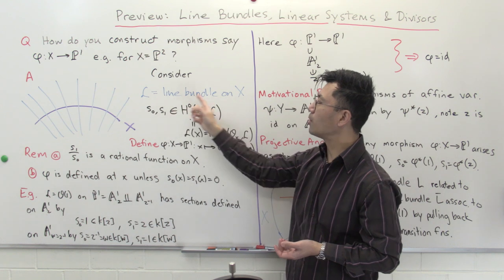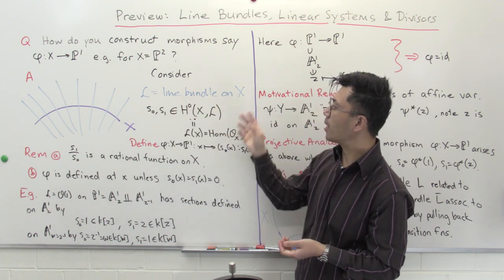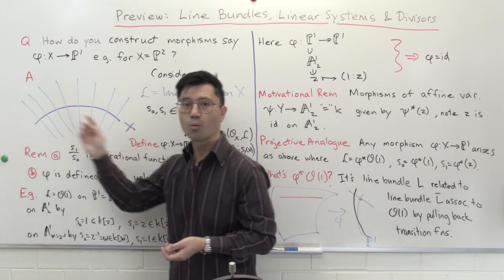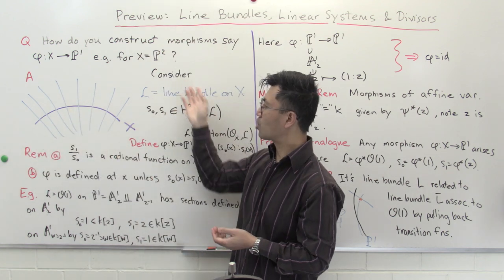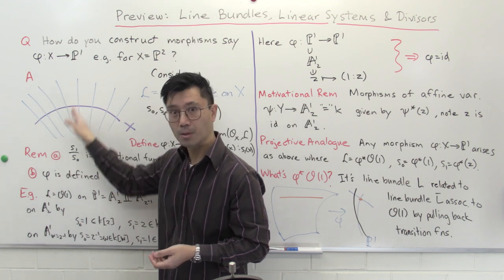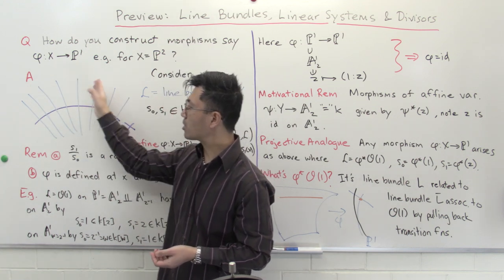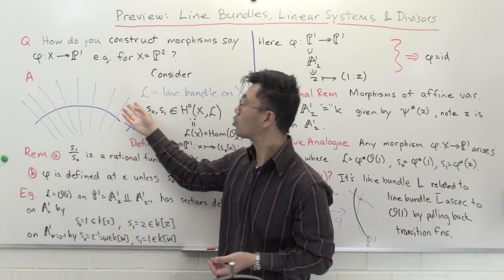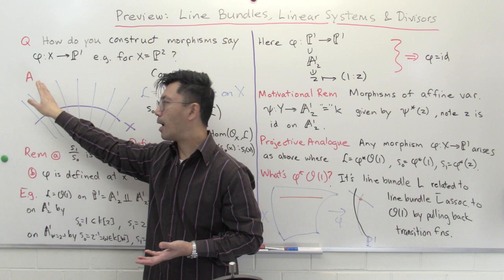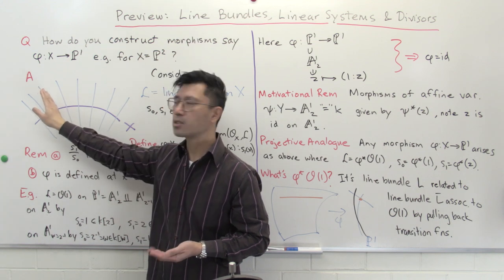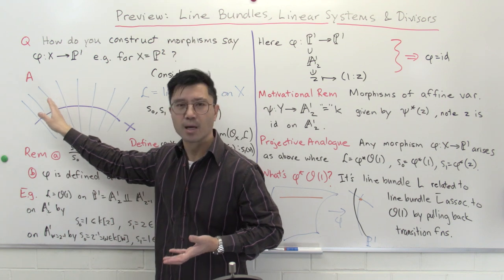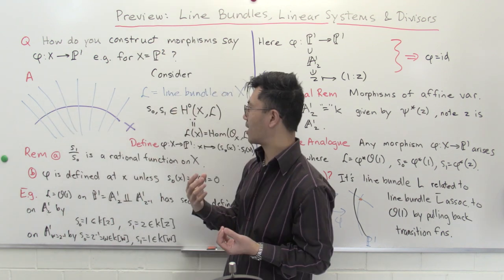We have some line bundle on our projective variety X. Think of it geometrically: for each point there's a one-dimensional vector space. That means it's isomorphic to the ground field k, but we don't have an actual isomorphism with k. So for each point in X we don't have an actual scalar associated with it — it's just some one-dimensional vector space.